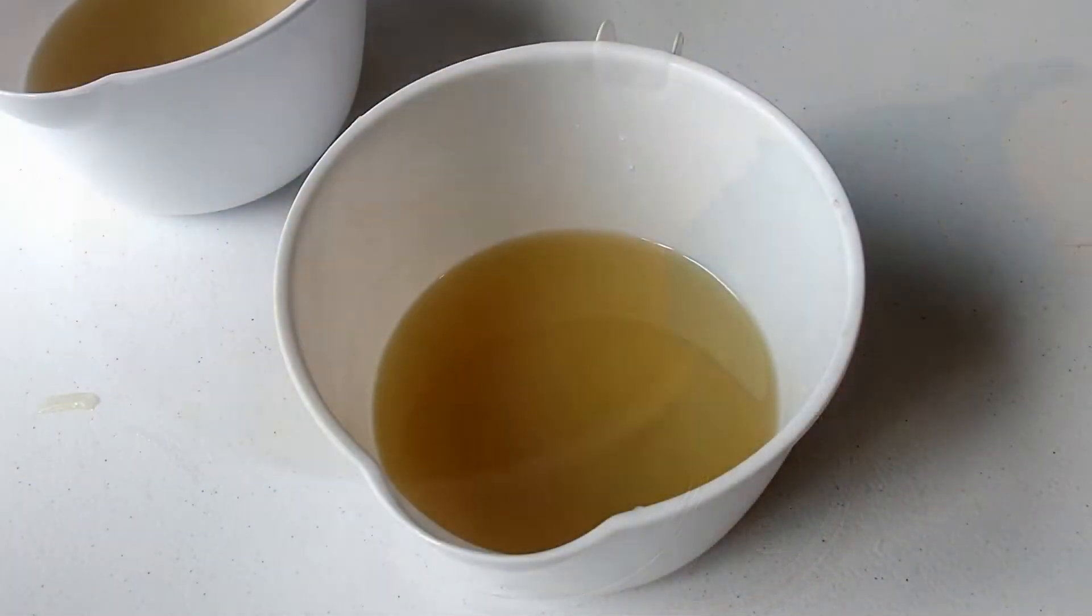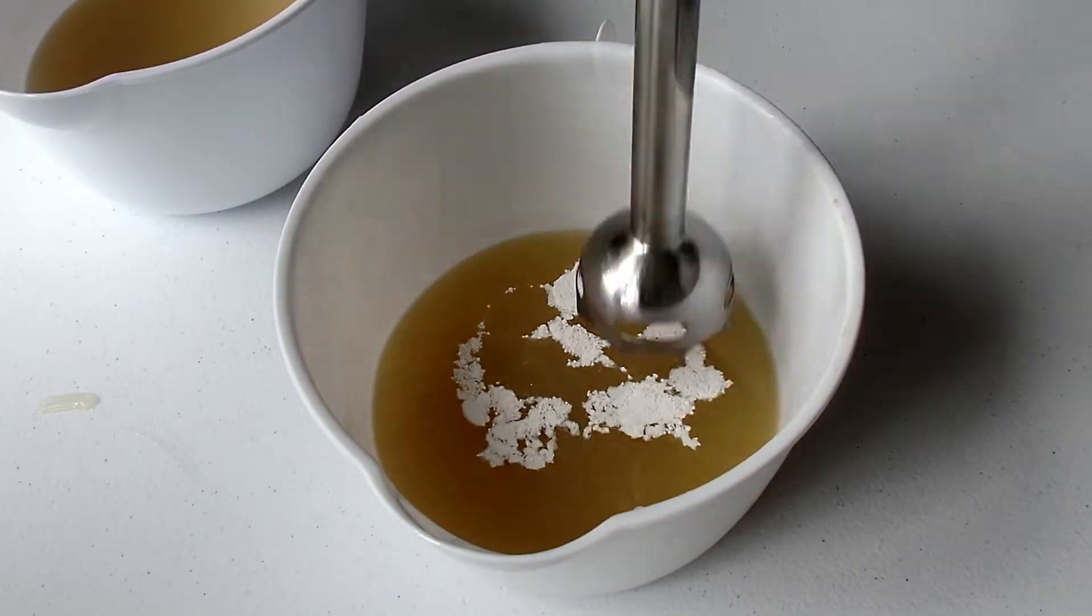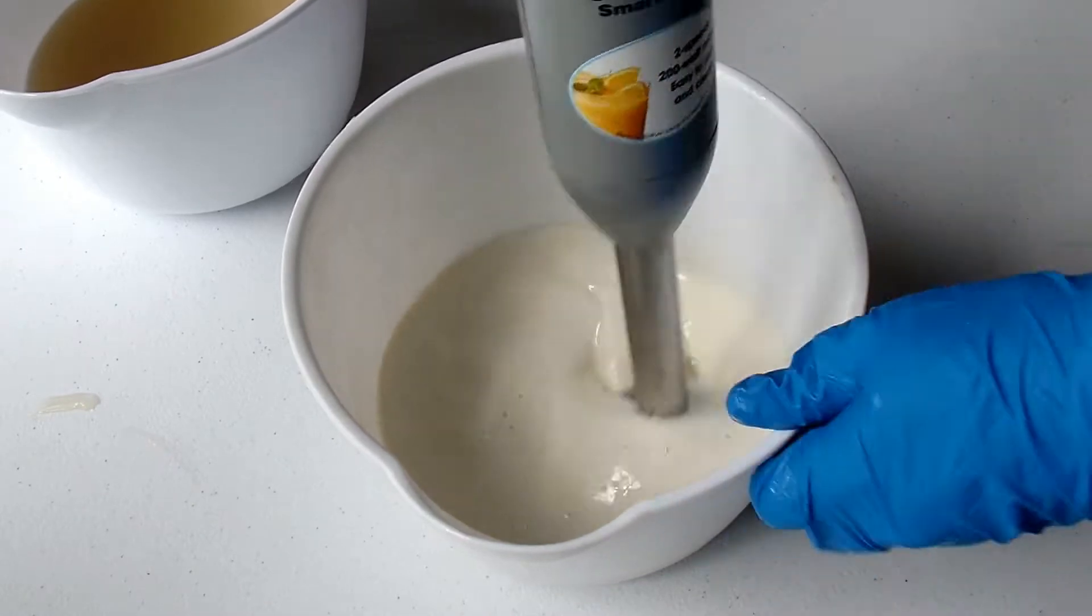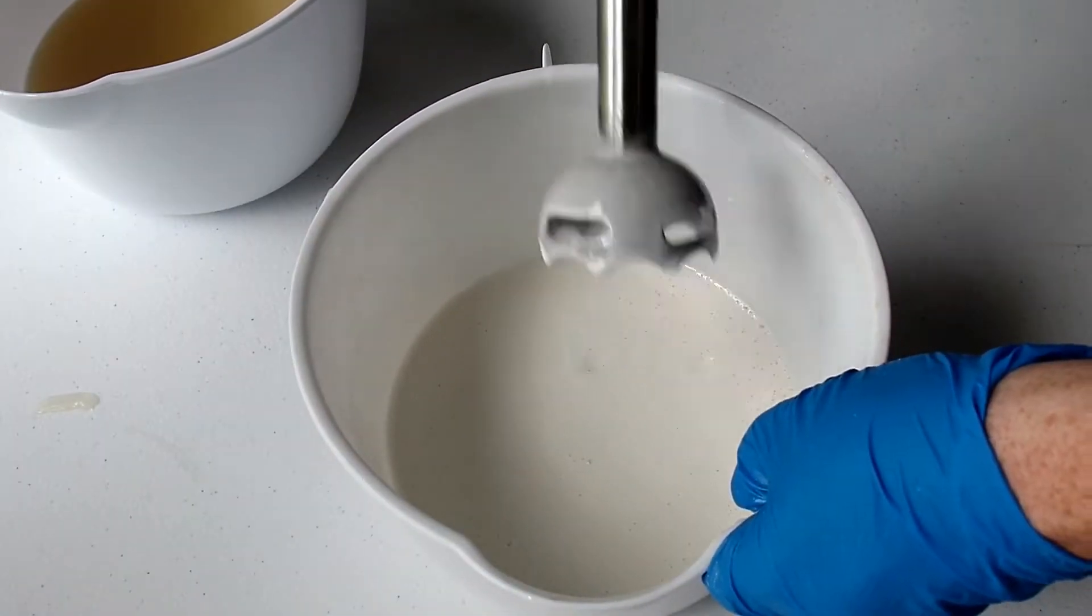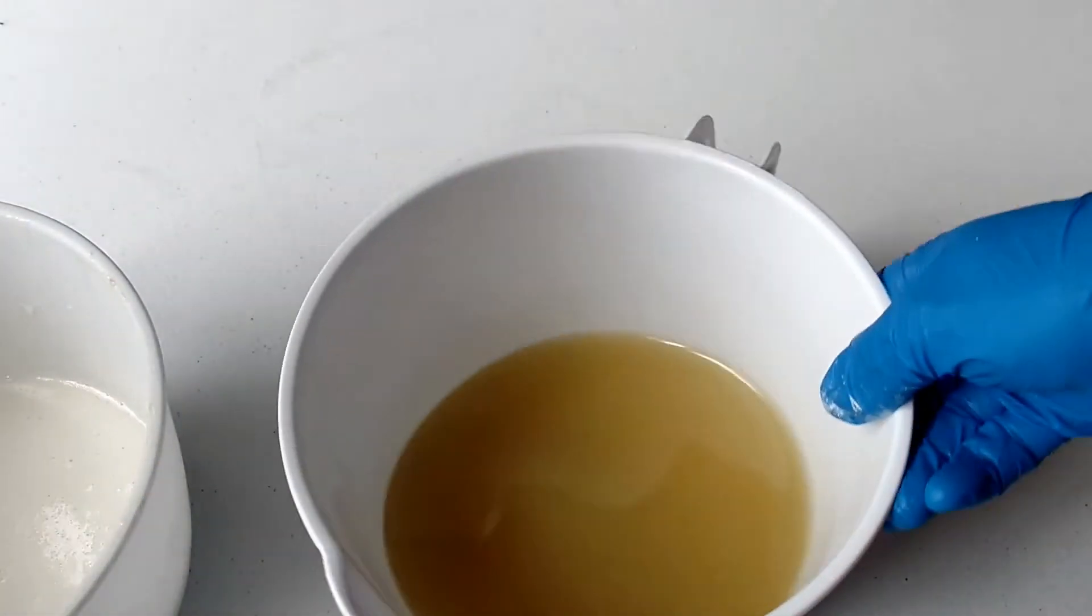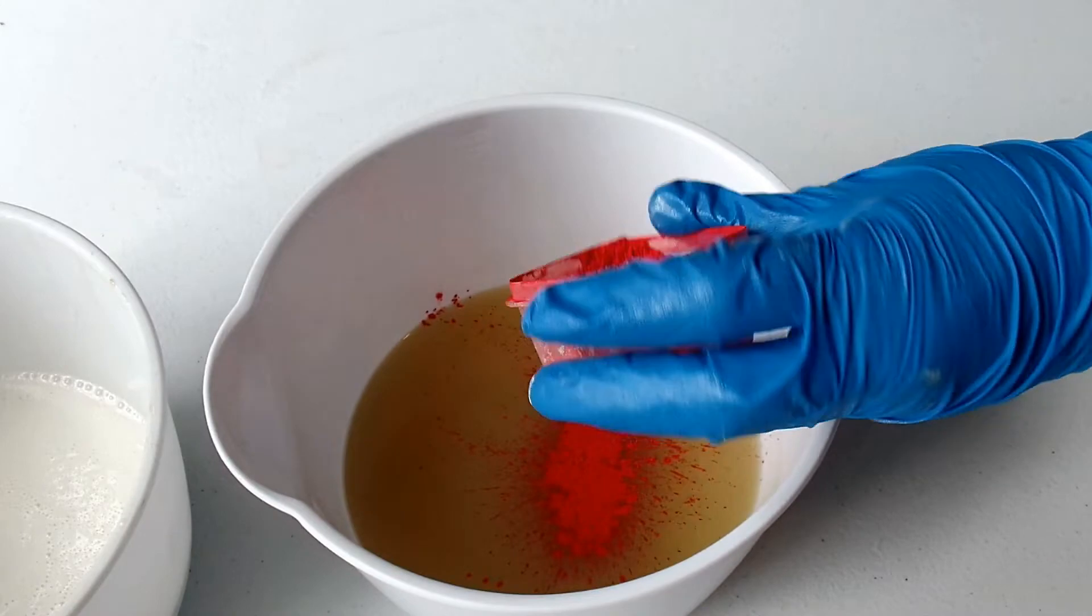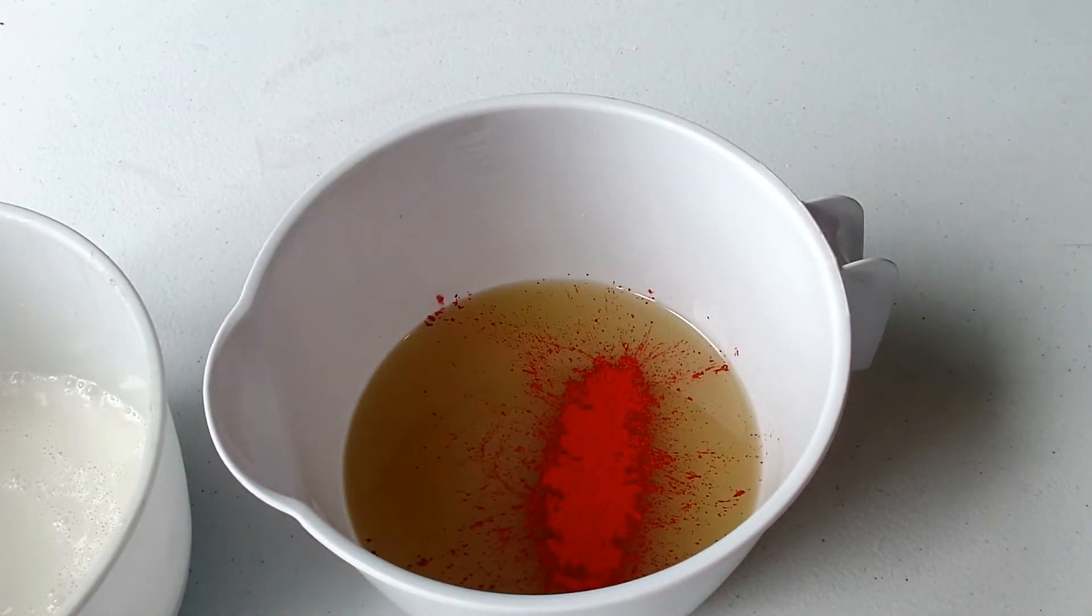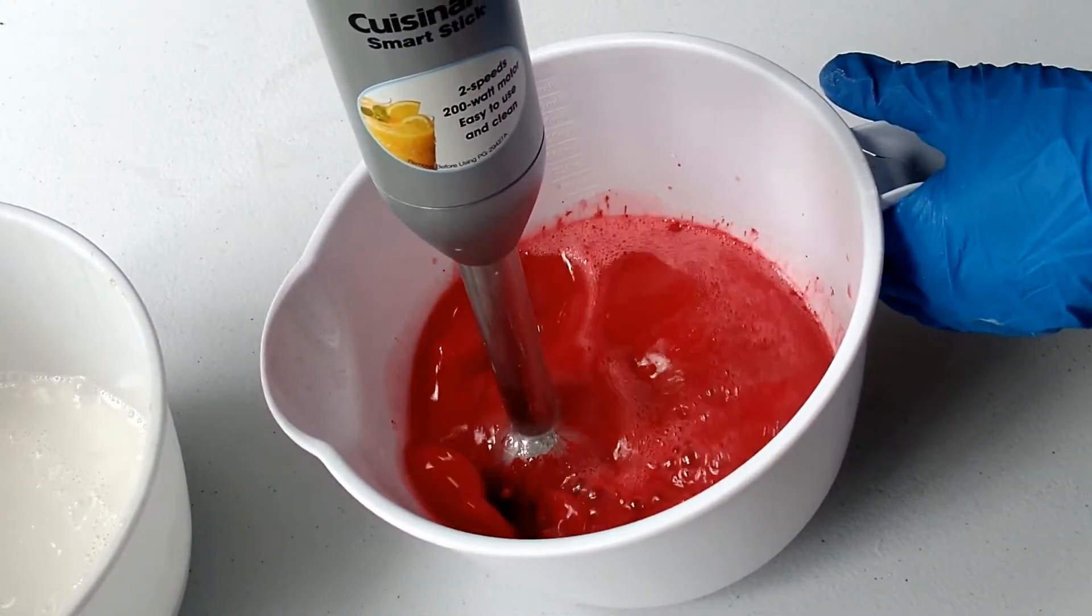Now that it's divided into two, I'm adding the colors. This is titanium dioxide and that's going to make this one white. The next color I'm using is from Nurture Soap Supply and that's real red mica. This is the best red I've come across that's actually truly red.